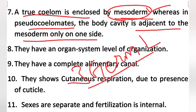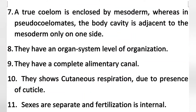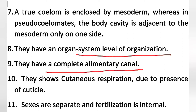The three germ layers are mesoderm, endoderm, and ectoderm. If the coelom is enclosed by mesoderm, it will be a true coelom; if it is adjacent to only one side, it will be a pseudocoelomate. Next point: they have an organ system level of organization — meaning they have proper organs.